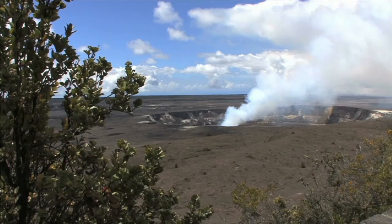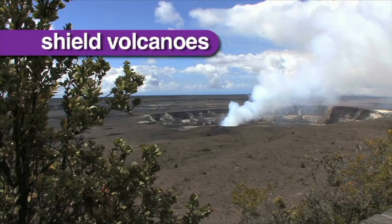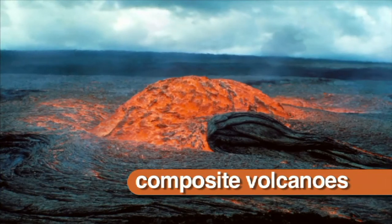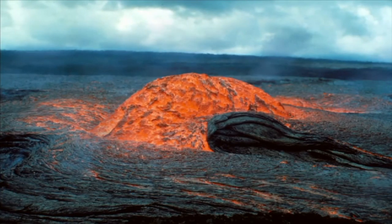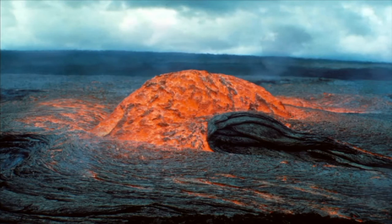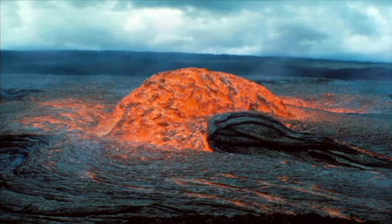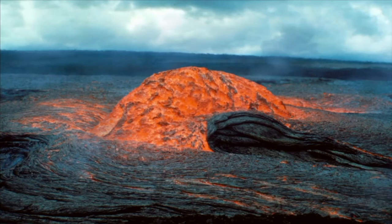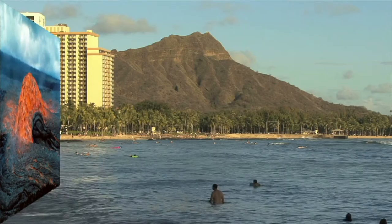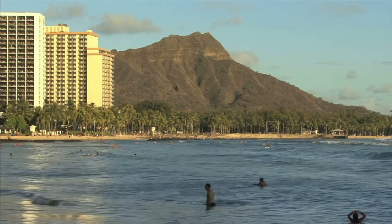There are two main types of volcanoes: shield volcanoes and composite volcanoes. Shield volcanoes are found in the middle of the Earth's tectonic plates. Lava from shield volcanoes cools and hardens, creating mountains of rock. The main Hawaiian islands are the tops of giant undersea shield volcanoes.